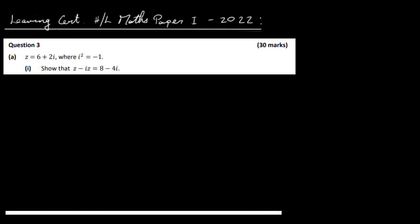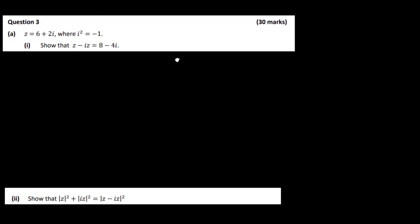This is the Leaving Cert Higher Level Maths Paper 1, 2022, question 3. This is a complex number type question. So we have part A here. We're given Z is equal to 6 plus 2i, i squared is minus 1. Show that Z minus i times Z is equal to 8 minus 4i.